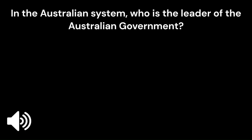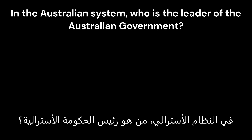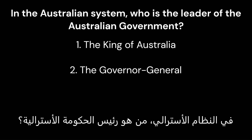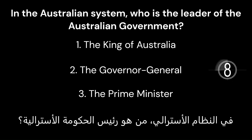In the Australian system, who is the leader of the Australian government? 1. The King of Australia. 2. The Governor-General. 3. The Prime Minister. The correct answer is 3. The Prime Minister.